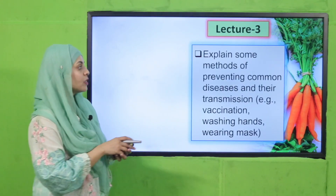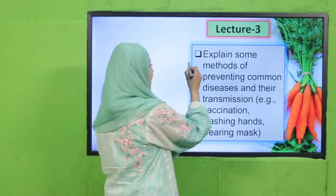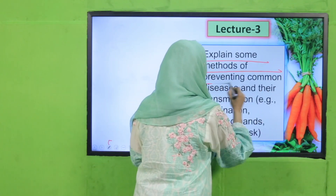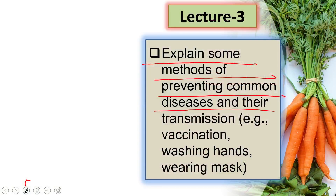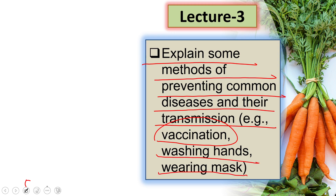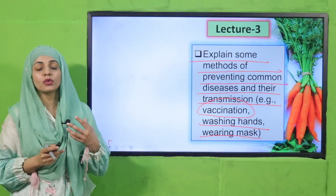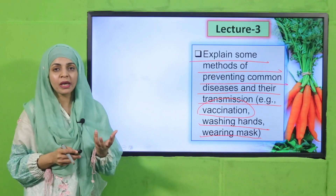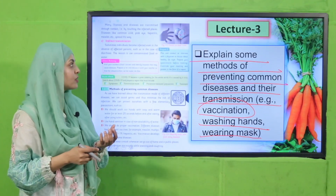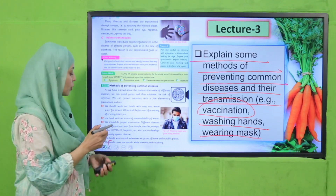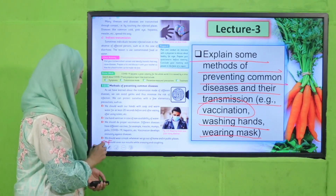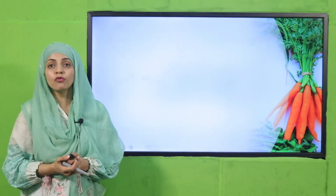In Lecture Number Three, students will be able to explain some methods of preventing common diseases and their transmission — for example, vaccination, washing hands, and wearing masks. We will discuss these preventive measures, and the page under discussion in Lecture Number Three is page number 42.